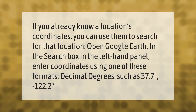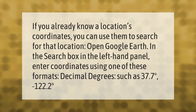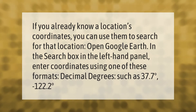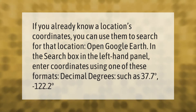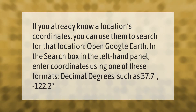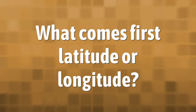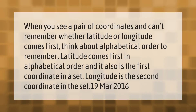If you already know a location's coordinates, you can use them to search for that location. Open Google Earth. In the search box in the left-hand panel, enter coordinates using one of these formats: decimal degrees, such as 37.7 degrees, -122.2 degrees.